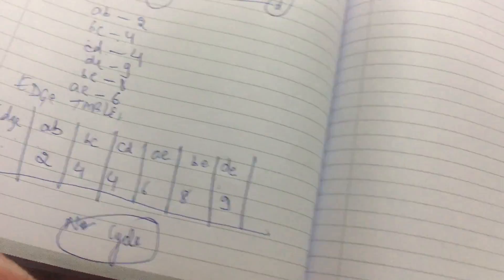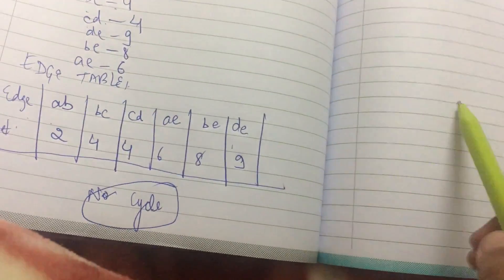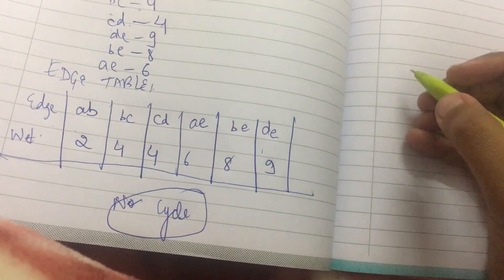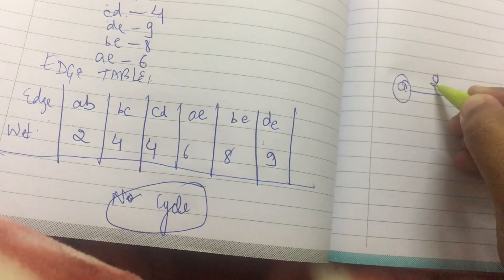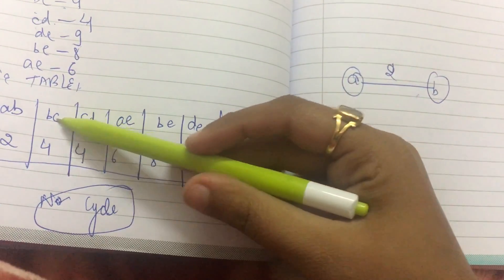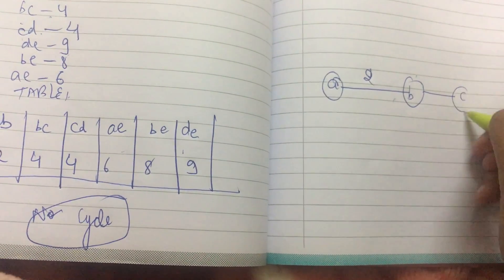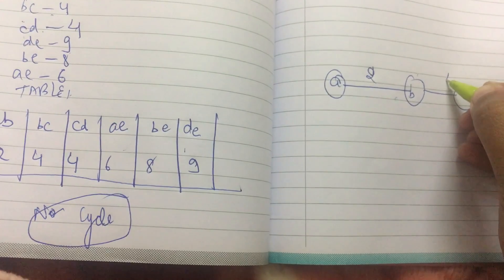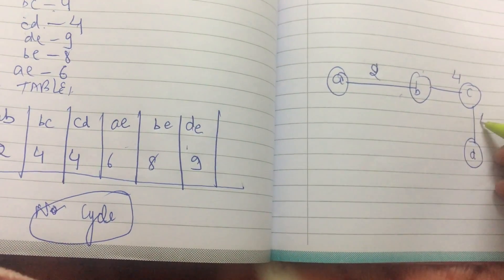Now we'll make a spanning tree for it, the minimum cost spanning tree. Let's make it here itself. So I start with the edge: A goes to B with the cost of 2. Then B goes to C with an edge of 4, C goes to D with an edge of 4.